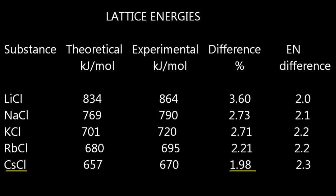Cesium chloride has the smallest difference between theoretical and experimental, which means it has the most ionic character and the least covalent character.